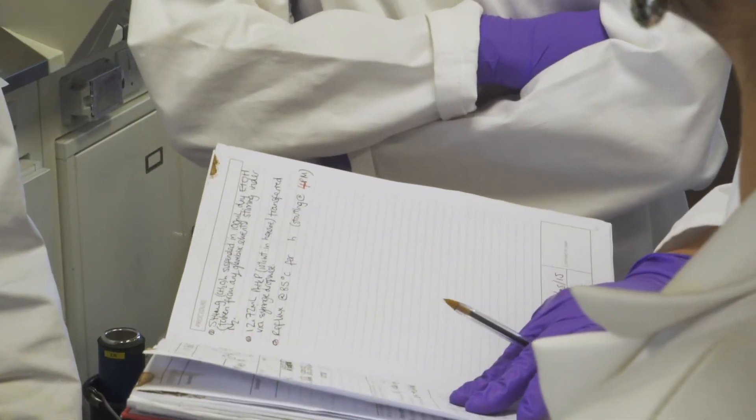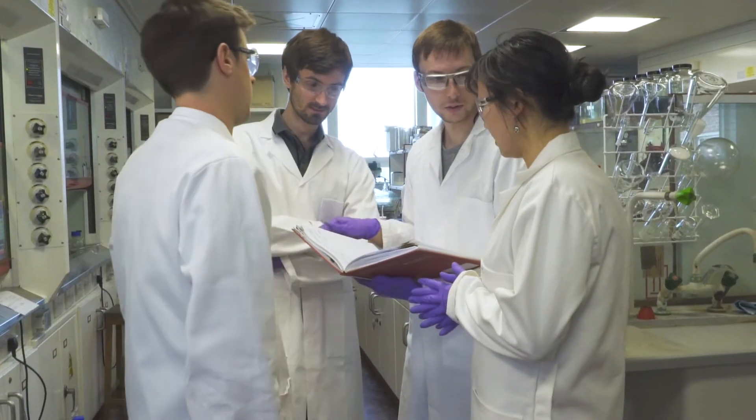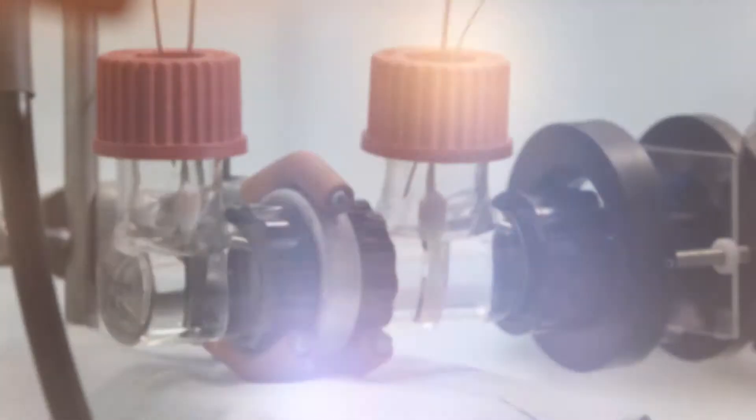Erwin Reisner and his 30 chemists want to produce hydrogen with the help of sunlight. This principle could be the basis for green energy supply.